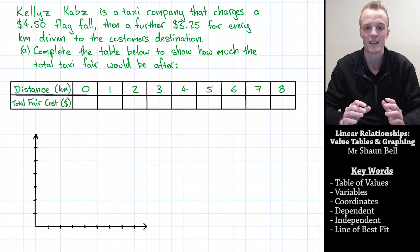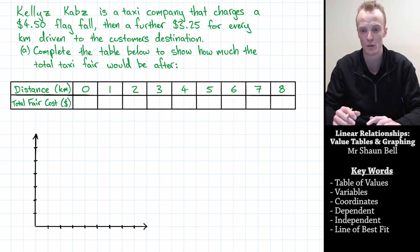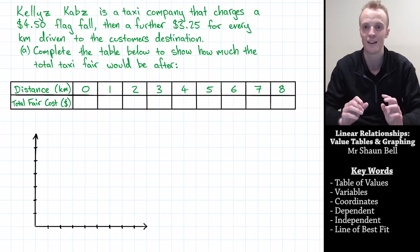But then they also get charged an extra $3.25 for every kilometre driven to the customer's destination. Our first task is to complete the table below to show how much the total taxi fare would be after zero kilometres, one kilometre, two kilometres all the way through to eight kilometres.